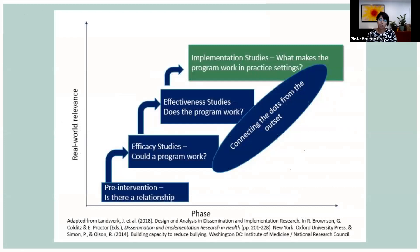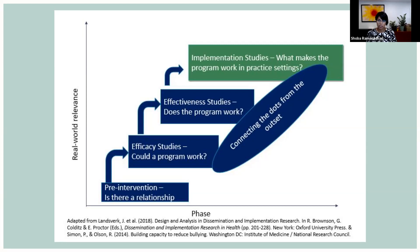For those of you newer to implementation science, you might have seen a figure like this, where we think about how the evidence base gets generated. We start in this pre-intervention space, thinking about relationships of interest. We look at efficacy studies — could a program work? We look at effectiveness studies, starting to get to real-world settings — does the program work? And then implementation studies, asking what makes the program work in practice settings. As a field, we're really trying to push for asking those implementation questions very early on, from efficacy and effectiveness, really thinking about the end users, the implementation context, and all of those things.